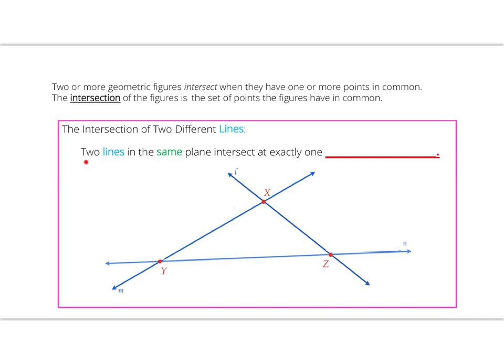Let's take a look at our two objects here. We have two lines in the same plane intersecting at exactly one point.